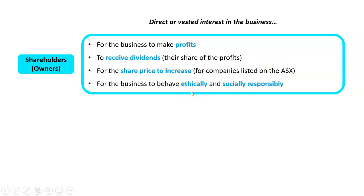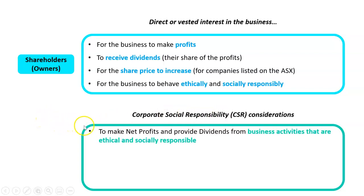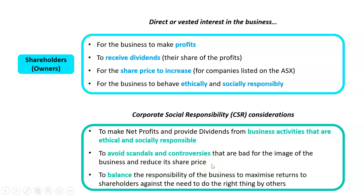Shareholders also want the business to behave ethically and socially responsibly — not every shareholder, but a lot of them. This topic is twofold: it's about their direct or vested interests, but also about CSR issues. Shareholders want profits and dividends from business activities that are ethical and socially responsible. They want the business to avoid scandals and controversies that damage its image and reduce the share price — being unethical is simply bad business. Overall, shareholders want the business to balance maximizing returns to shareholders against doing the right thing by others in the community and society.